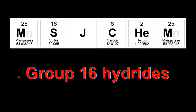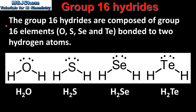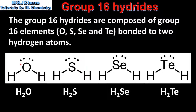This is MSJChem. In this video I'll be taking a look at the group 16 hydrides. The group 16 hydrides are composed of group 16 elements bonded to two hydrogen atoms. Here we can see the Lewis structures of the group 16 hydrides. From left to right we have H2O, H2S, H2Se, and H2Te. Each molecule is composed of a group 16 atom bonded to two hydrogen atoms, and on each group 16 atom we also have two lone pairs of electrons.